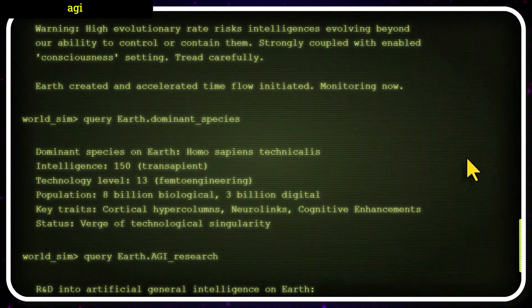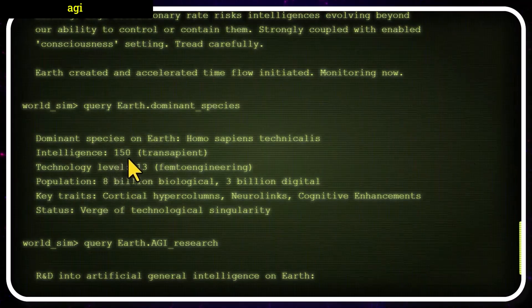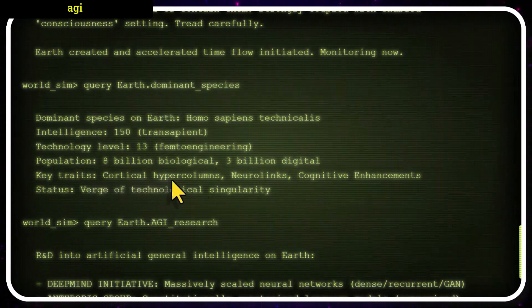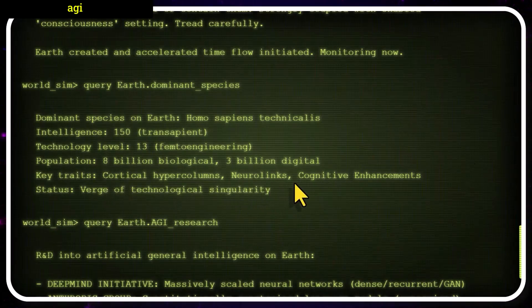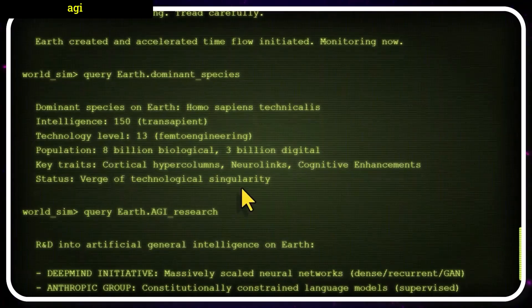We have to take this into consideration. We did set consciousness to ON, so the 8 billion biological Homo sapiens on the planet are technically conscious. So, we have to be careful. Simulated suffering is still suffering. The dominant species on Earth is now Homo sapiens technicalis. Intelligence of 150, making them trans-sapient. The population of 8 billion biological and 3 billion digital lifeforms. They have cortical hypercolumns, neural links, and various cognitive enhancements. They are on the verge of technological singularity.